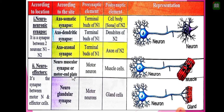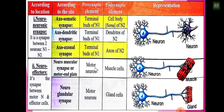The neuromuscular synapse — also called the motor end plate — has the motor neuron as the pre-synaptic element and muscle cells as the post-synaptic element. The neuro-glandular synapse is a synapse between a neuron and a gland: the pre-synaptic element is the motor neuron, while the post-synaptic element is the gland cells. These are neuro-effector synapses — between the motor neuron and an effector cell, which can be a muscle or a gland.